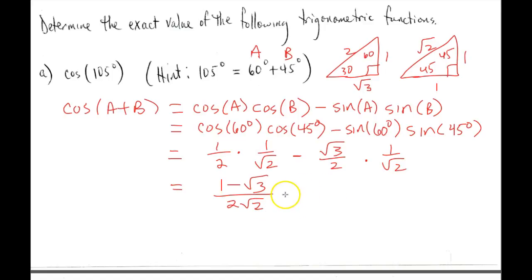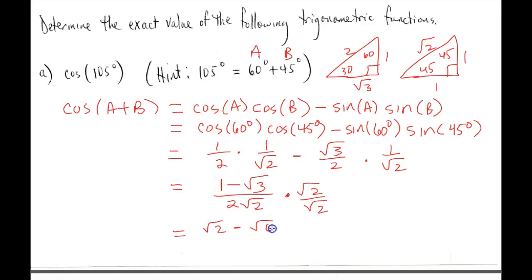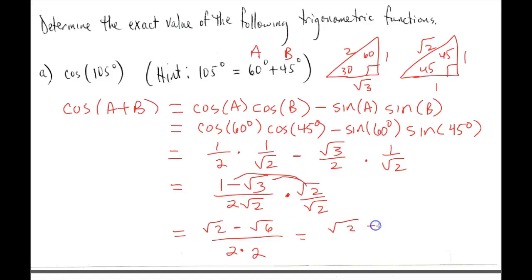We can rationalize the denominator by multiplying numerator and denominator by √2. That gives us √2 minus √6 in the numerator, because we distribute √2 into both terms. In the denominator, 2 times √2 times √2 is just 4. So our final answer is (√2 minus √6) over 4.